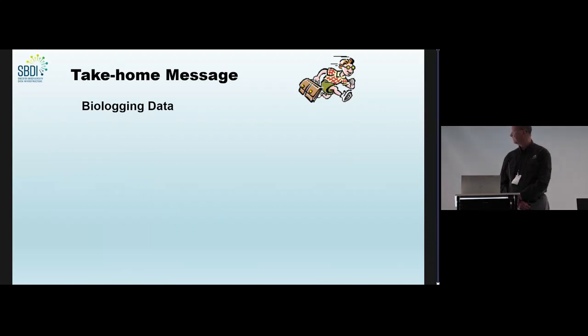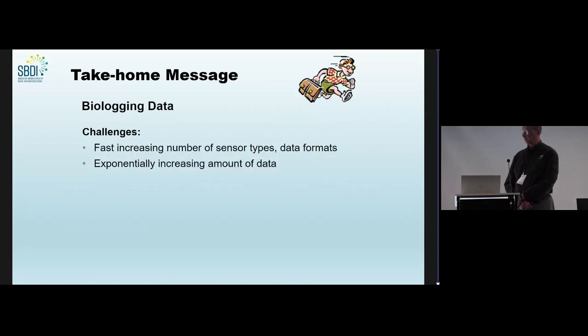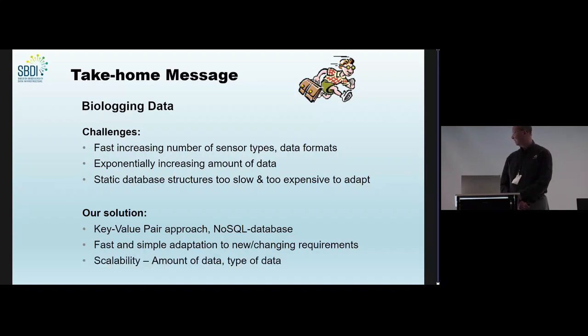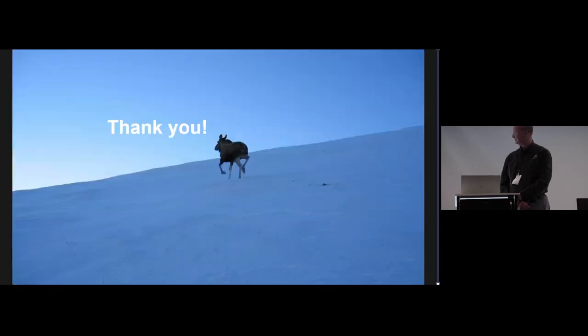So, my take-home message for you. When it comes to biologging data, we are facing a couple of challenges. The fast increasing number of sensor types and data formats and the exponentially increasing amount of data, which makes a static database structure too slow and also too expensive to adapt all the time. Our solution to this is to use a key value pair approach in a NoSQL database, which gives us the possibility to a fast and simple adaptation to the new and changing requirements and also adds scalability to the system regarding the amount of data and the type of data. Thank you.